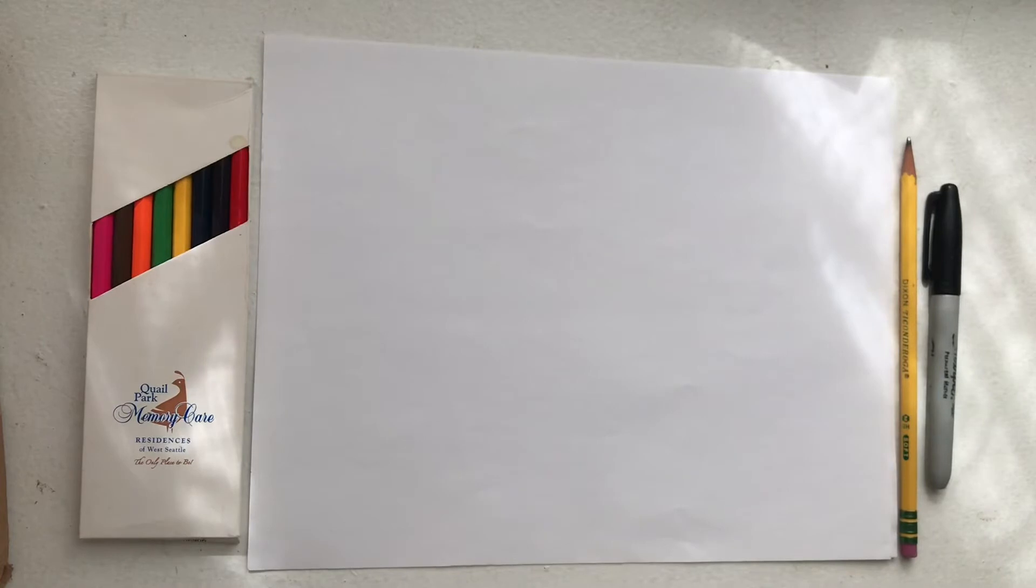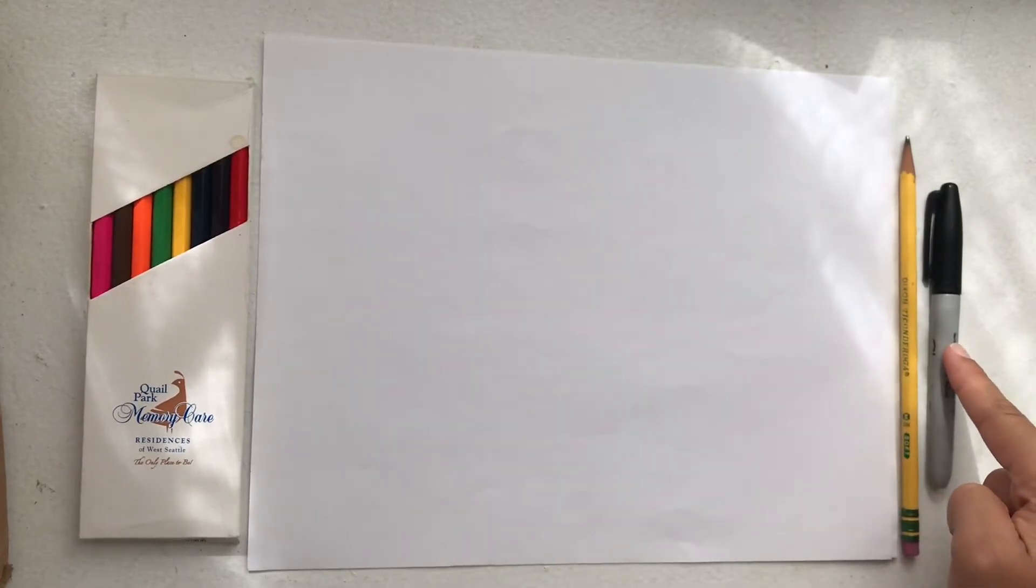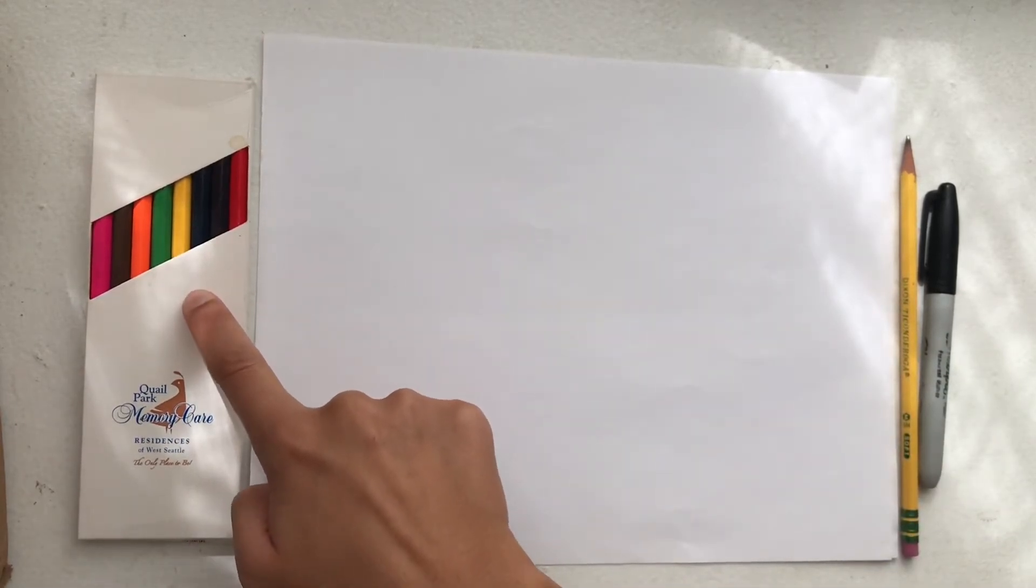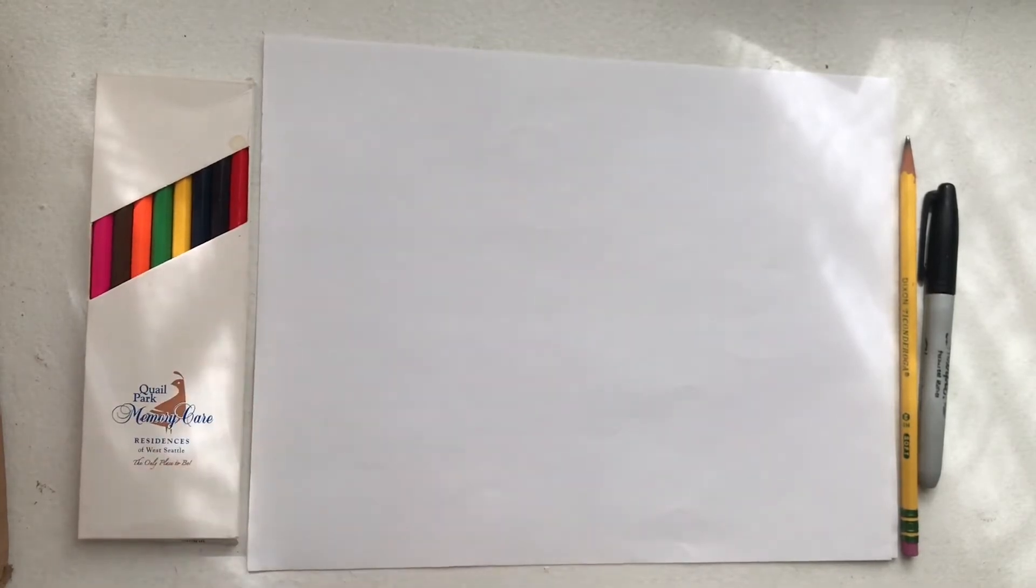To make our kitty face, all we are going to need is a pencil, a sharpie or a pen, and something to color with. I'm using colored pencils, but you can use markers, crayons, paints, whatever you have.